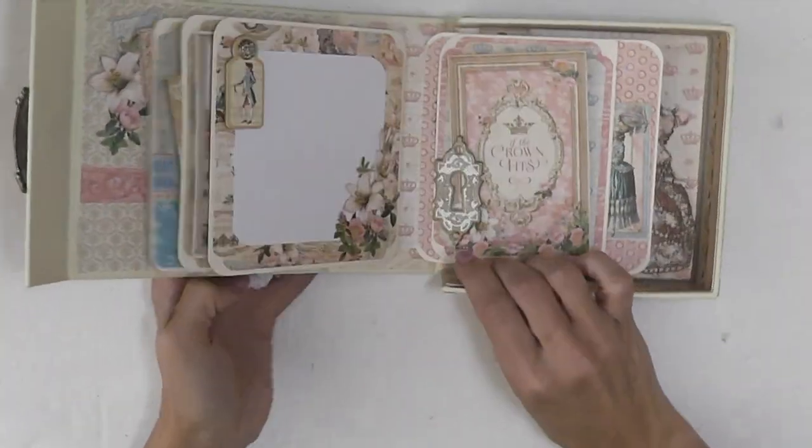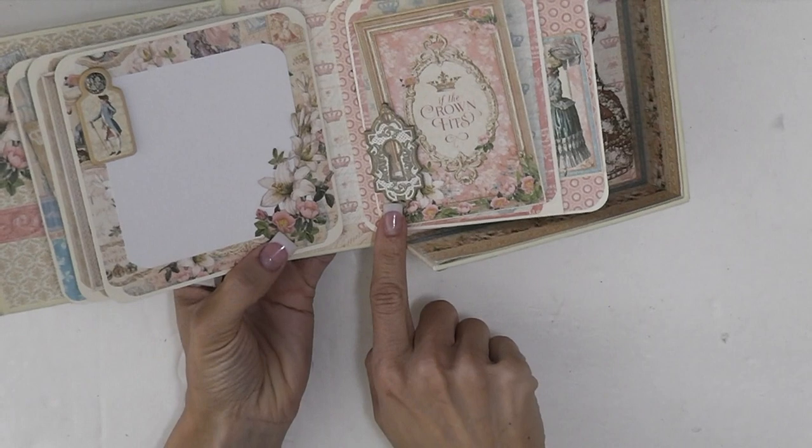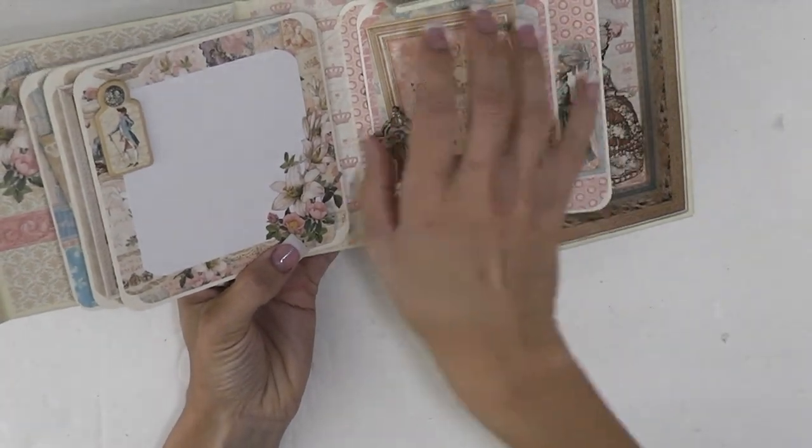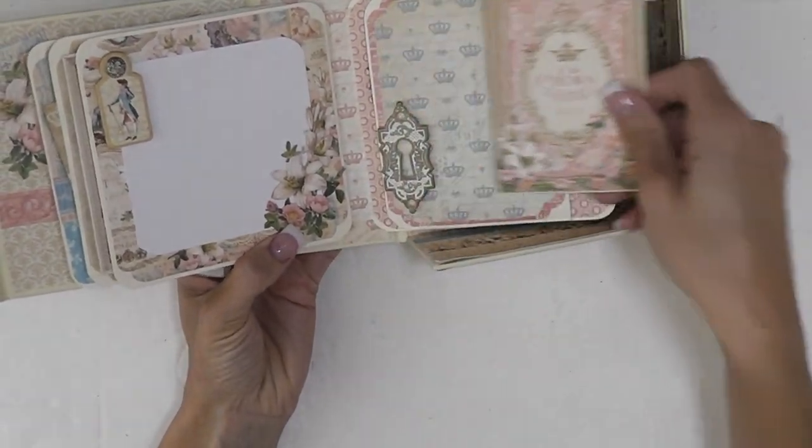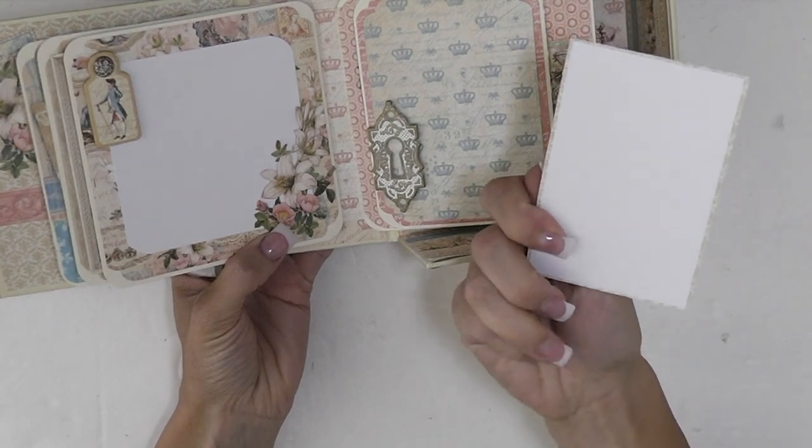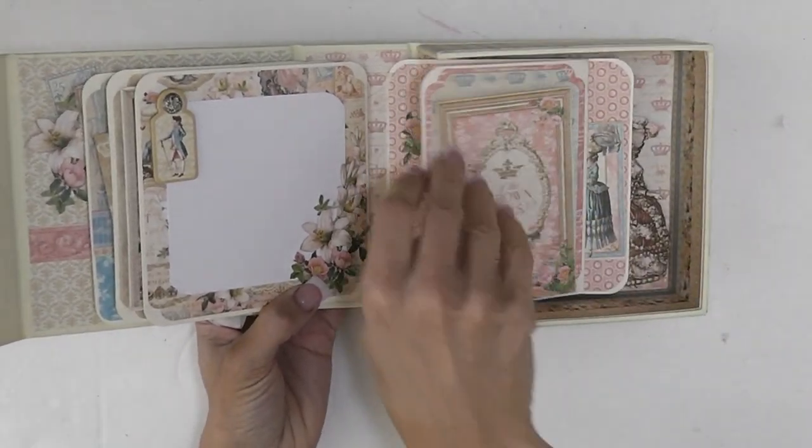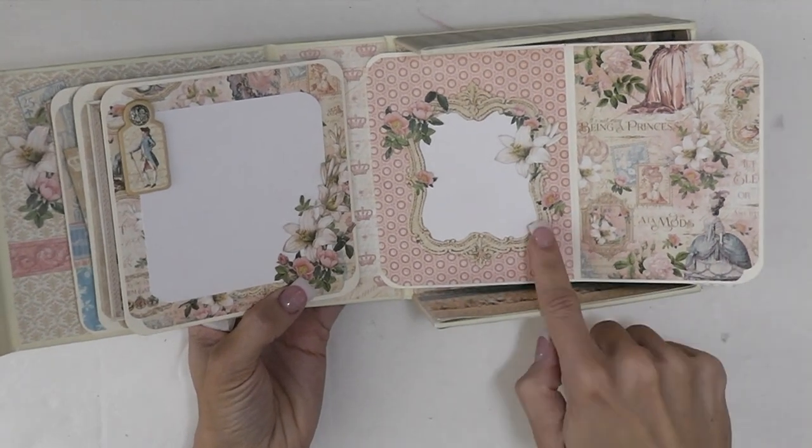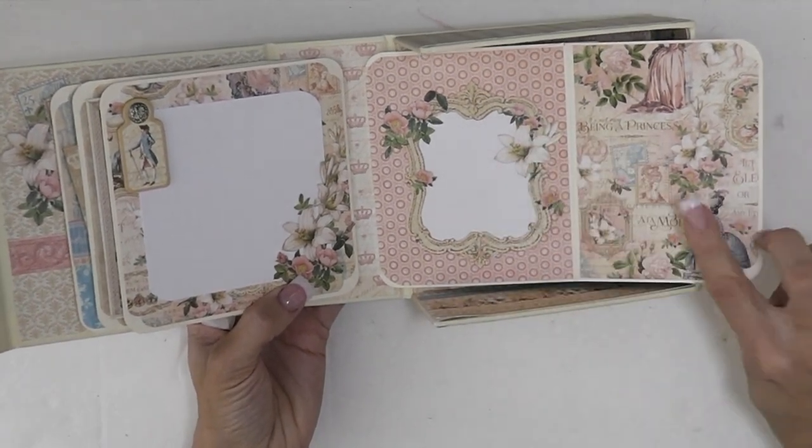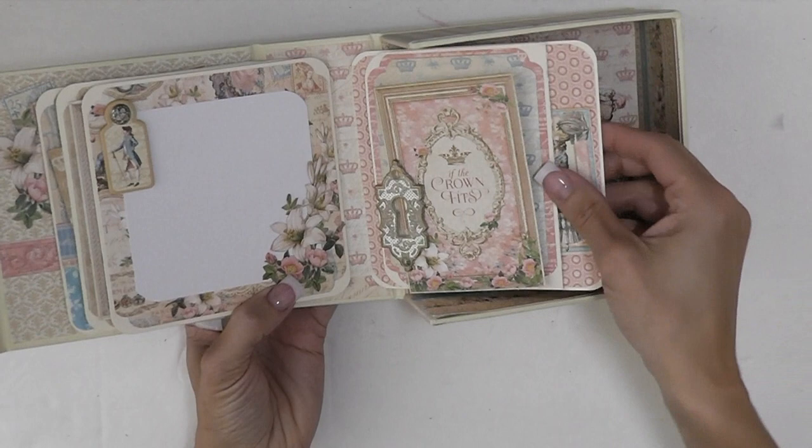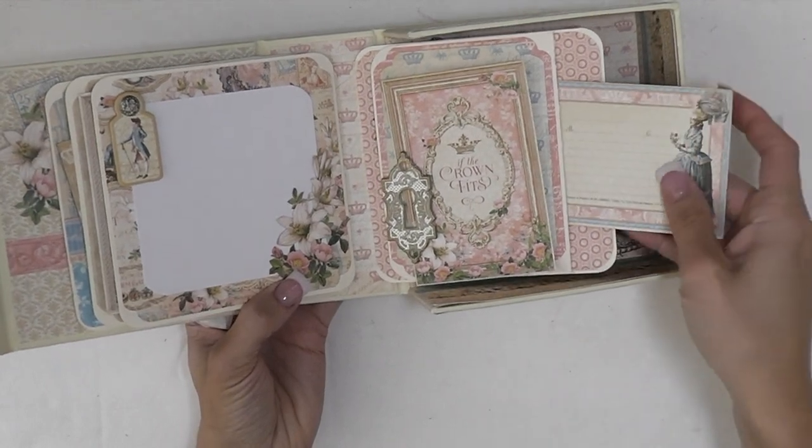And then another page using the extra tag that came with the box. And so this is another tag that you can put a photo in. And then opens up for another little frame with a photo spot, another photo spot here, and then another pocket.